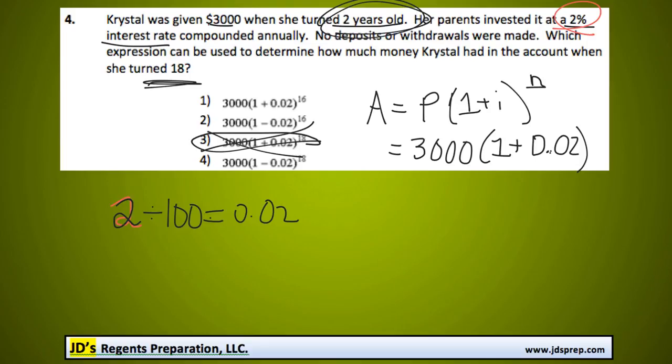It started when Crystal was 2 years old. So the difference from 2 years to 18 years is a total of 16. So it's actually going to be to the power of 16. And that matches solution number 1.